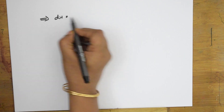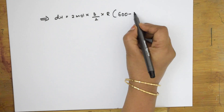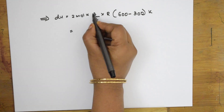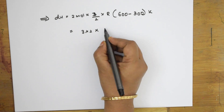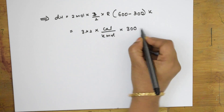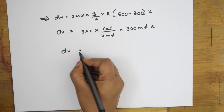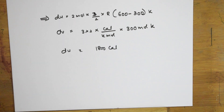Putting all values into the equation: dU = 2 × (3/2 R) × (600 − 300) = 2 × (3/2 R) × 300 = 3 × 600 calories = 1800 calories. So the change in internal energy is 1800 calories.